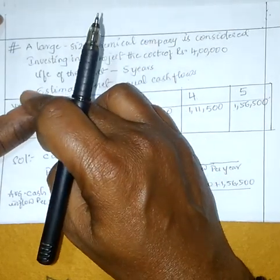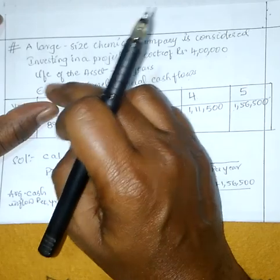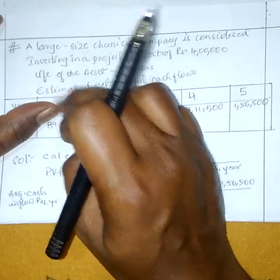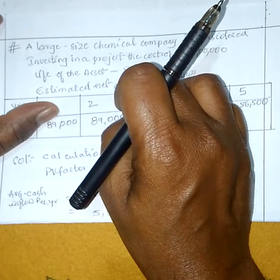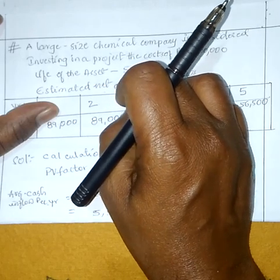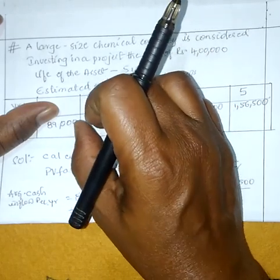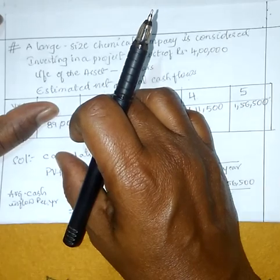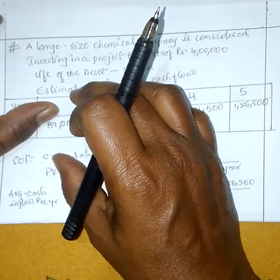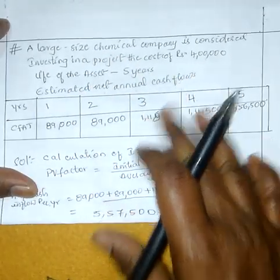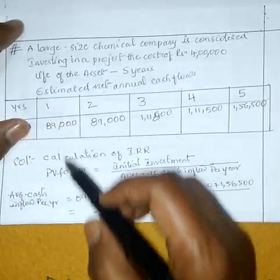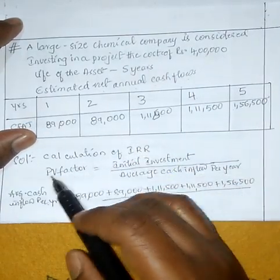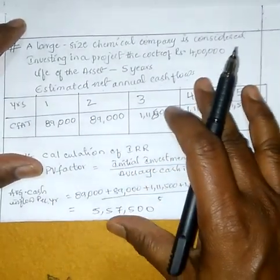IRR PV factor reach avutthet manamu a 10 percentage tiskoodan. In case reach andte dhagger loo lekuundi, adhi positive raakundi, next percentage tiskoodan reach avutthundi, manamu IRR find out chedam jarukundi. So ipad oosthet calculation of IRR — PV factor find out chayadamu.